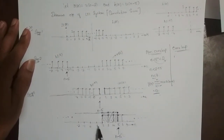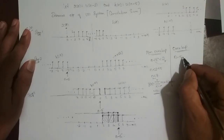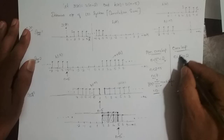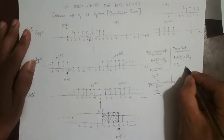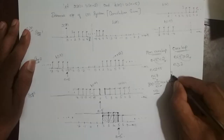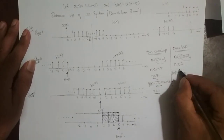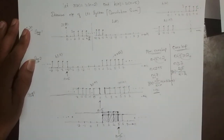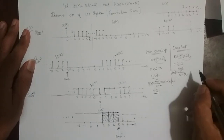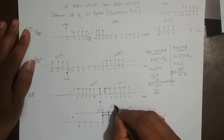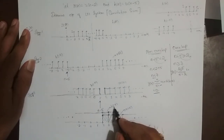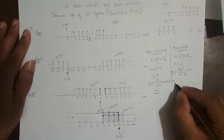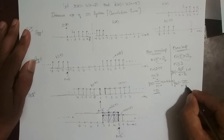The overlap region starts when n minus 5 is greater than or equal to 2, so n is greater than or equal to 7. For this region, y of n equals summation k from 2 to n minus 5 of x of k times h of n minus k. Both x of k and h of minus k are unit step functions with amplitude 1, so y of n equals summation k from 2 to n minus 5 of 1.